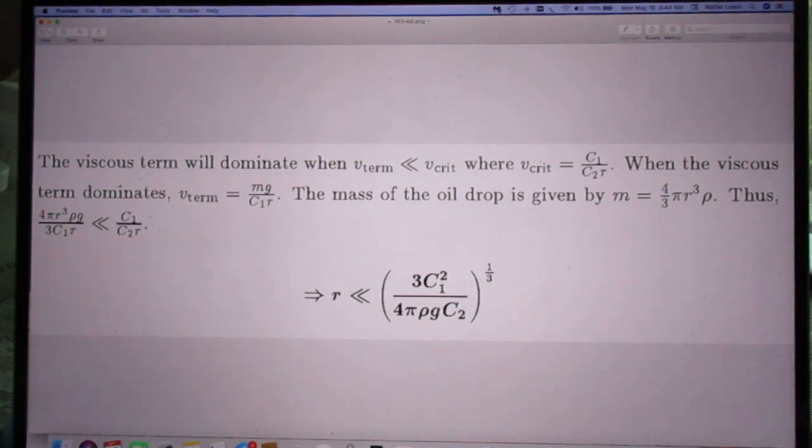When the viscous term dominates, as I mentioned in that lecture, the terminal velocity is mg divided by c1r. The mass of the oil drop is given by 4 thirds pi r cubed times rho. It is assumed here that the very small size of the water drop still remains spherical.